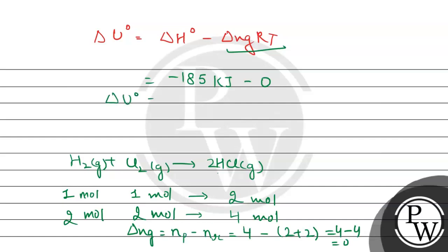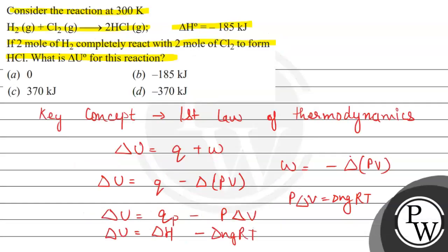So ΔU° will come minus 185 kJ. And from the given options, we can see it is option B only. So let us write the final answer of this question: minus 185 kJ. And options A, C, and D are incorrect. Hope you understood it well. Best of luck.